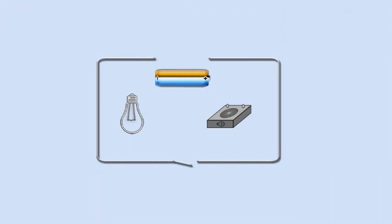You can make a simple electric circuit yourself using a battery, some wire, and a light bulb or buzzer.